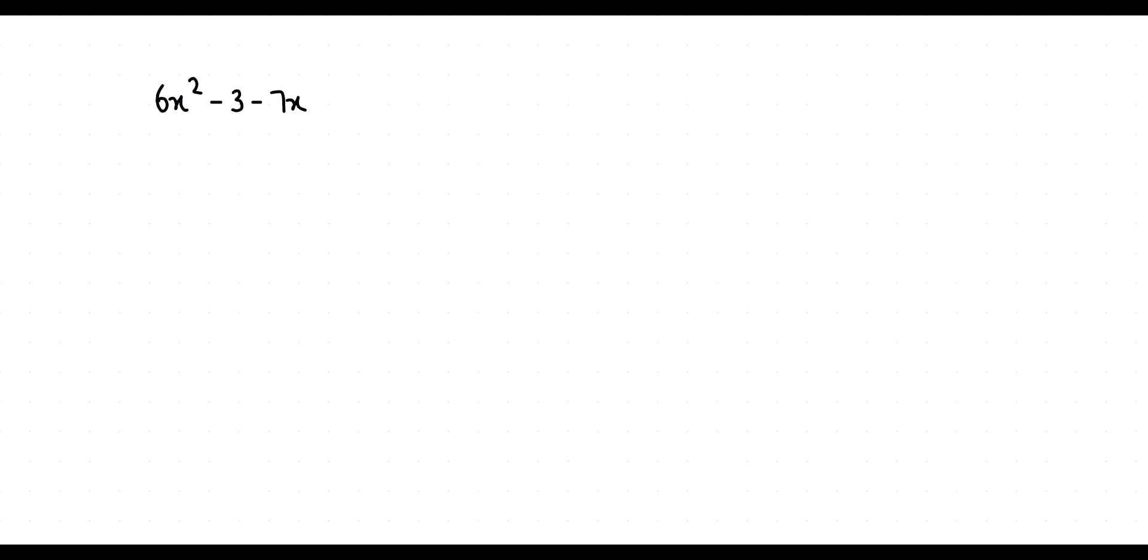So let's factorize it. First I'm going to write it in proper way, that is 6x square minus 7x first, the algebraic terms and then the constant.